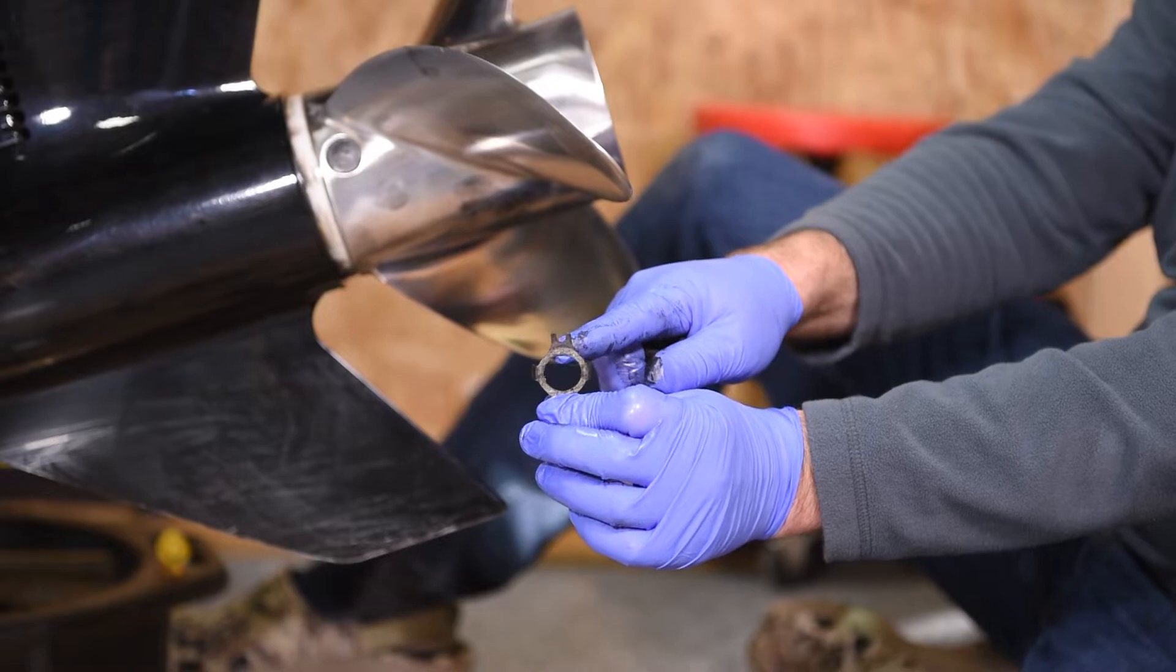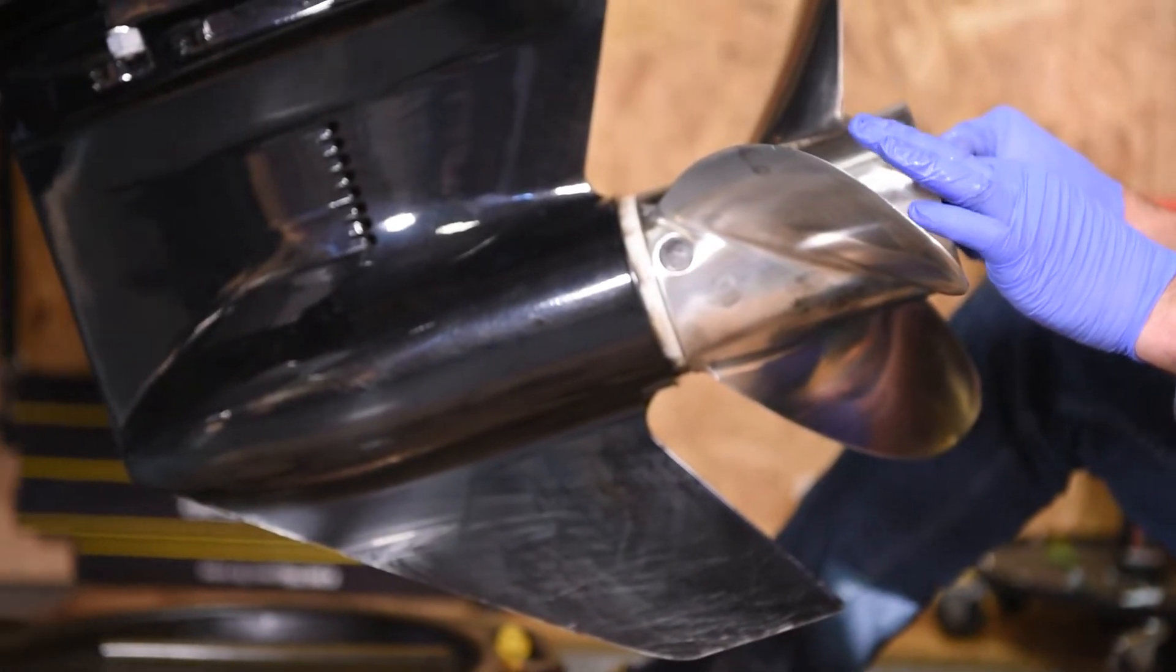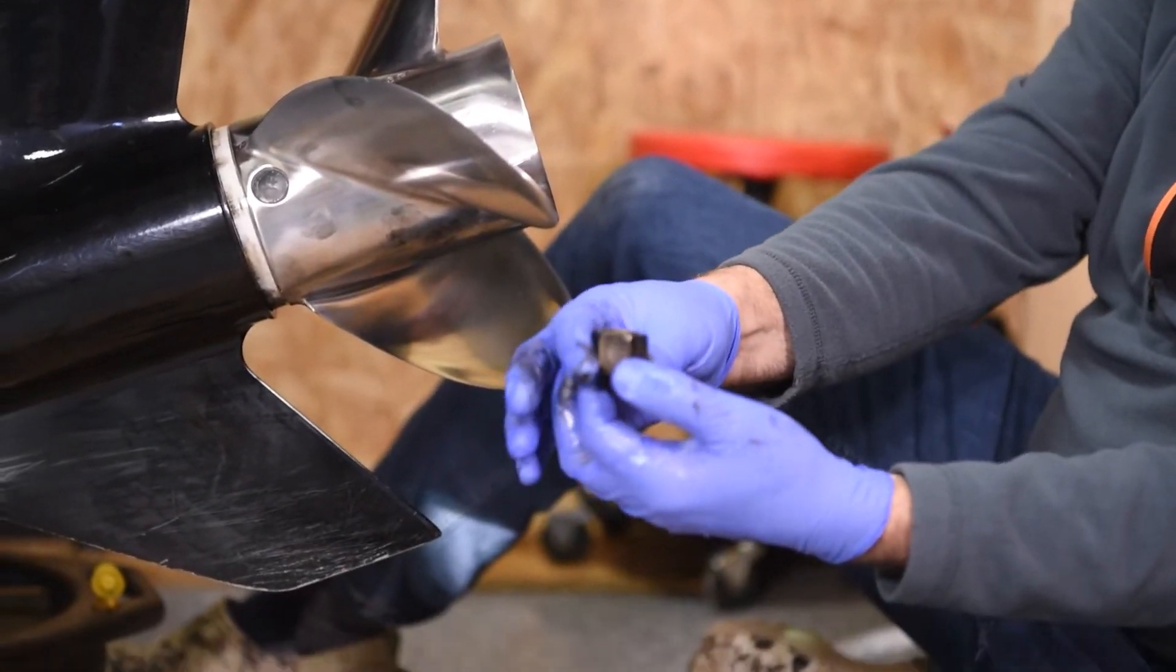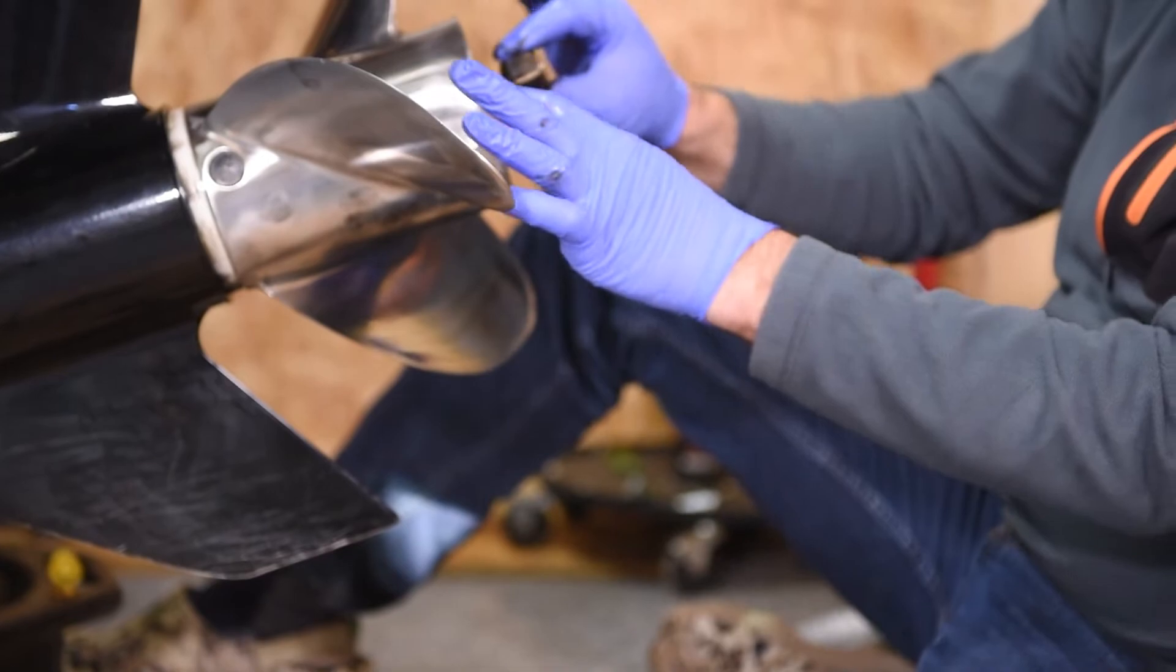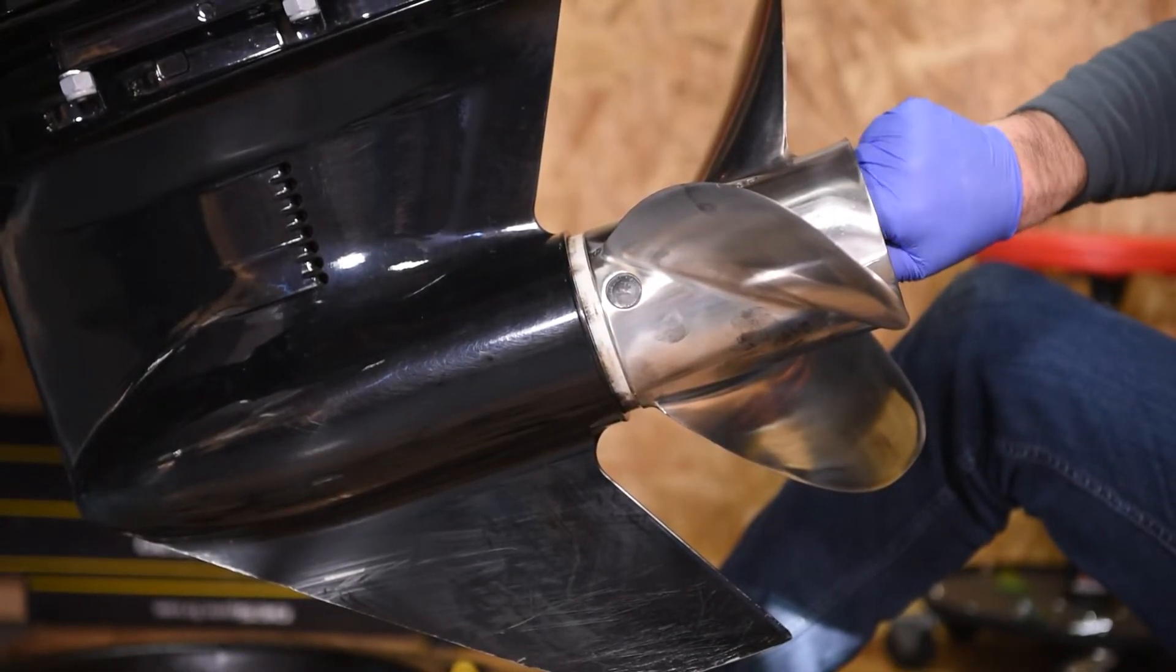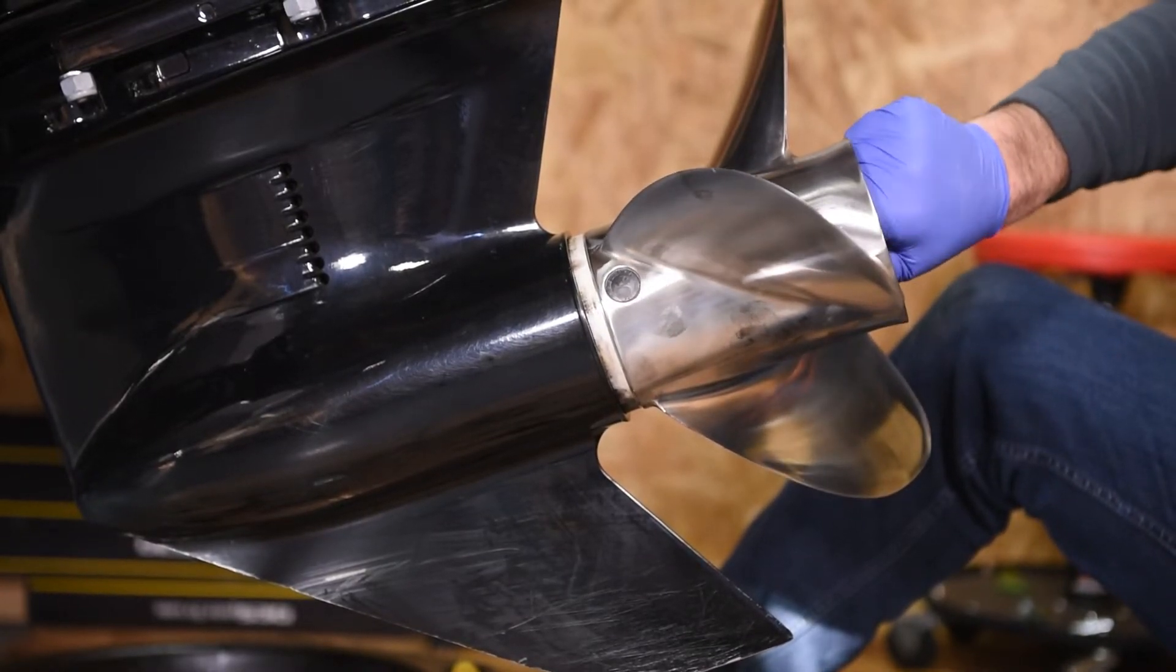We'll just slide that back in, and then you want to put your nut on, get that started. All right, you can hand-tighten this until you get to the lock rubber on the nut, and then at that point we'll have to get our prop wrench and our piece of wood out.